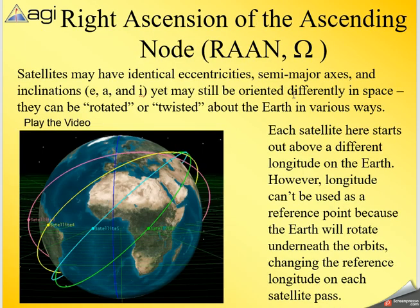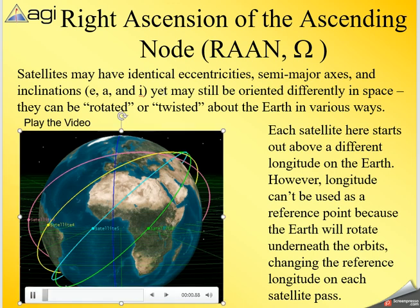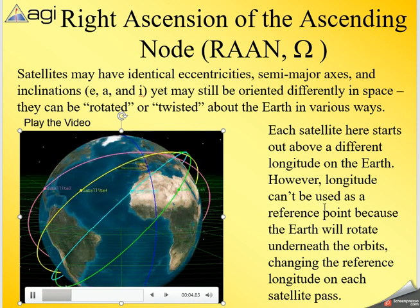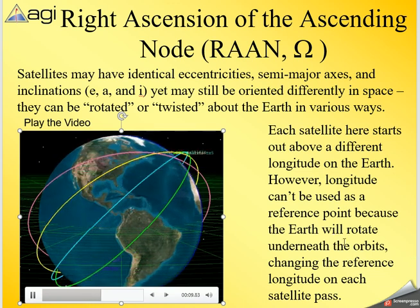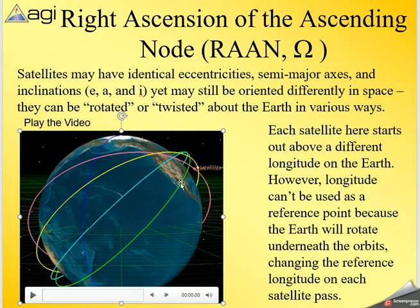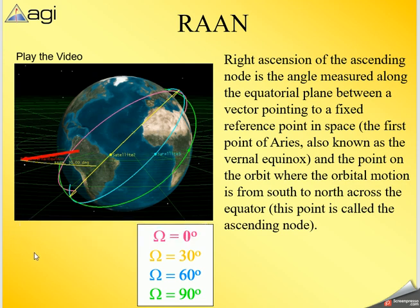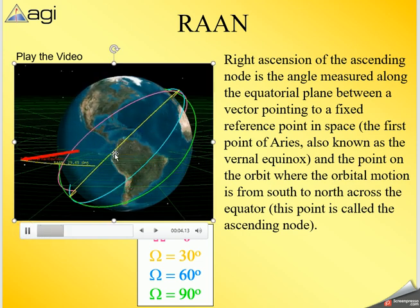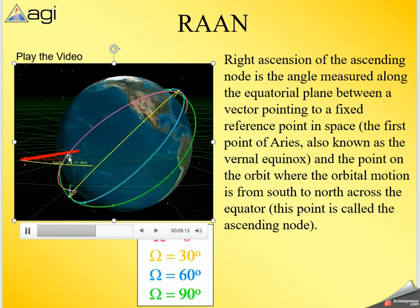The Right Ascension of the Ascending Node, or RAAN: satellites may have identical eccentricities, semi-major axes, and inclinations, yet still be oriented differently in space — rotated or twisted about the Earth. Longitude can't be used as a reference since the Earth rotates underneath the orbits. Here the purple-pink orbit has a RAAN of zero, then 30 degrees, 60, and 90 degrees rotated off the focal point.